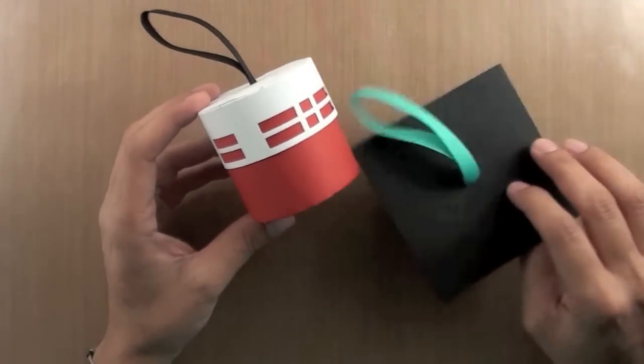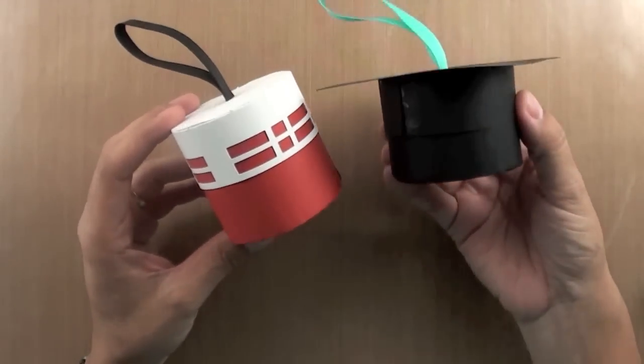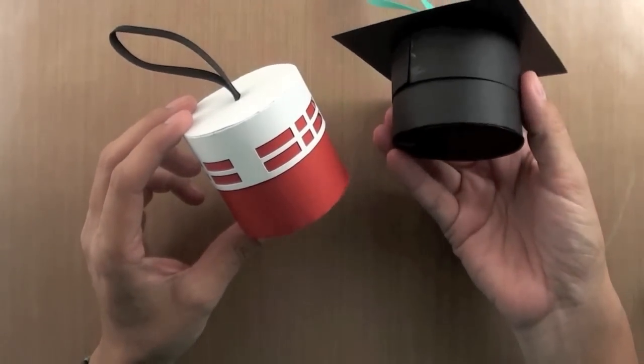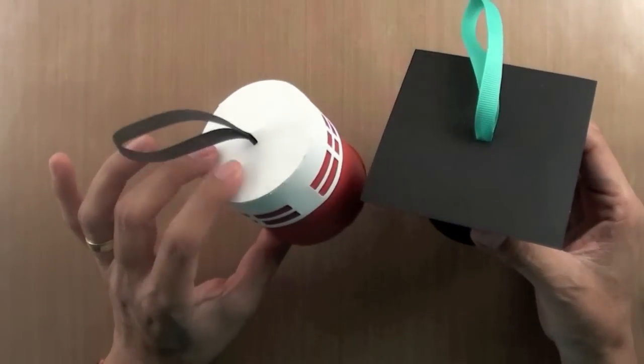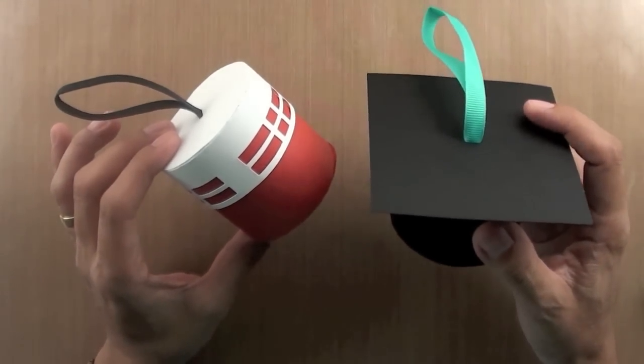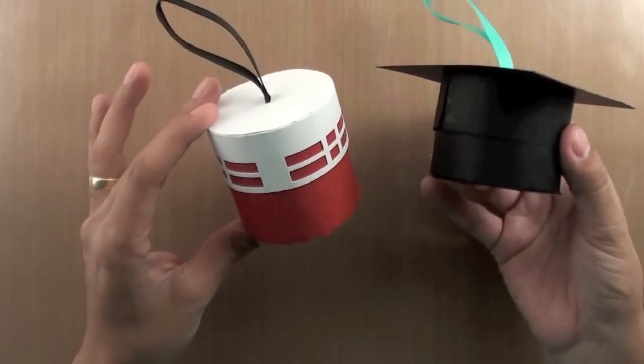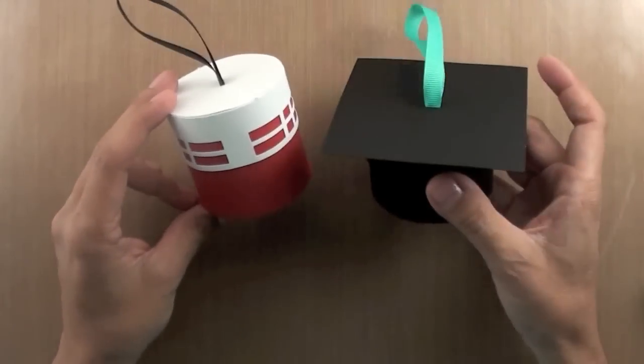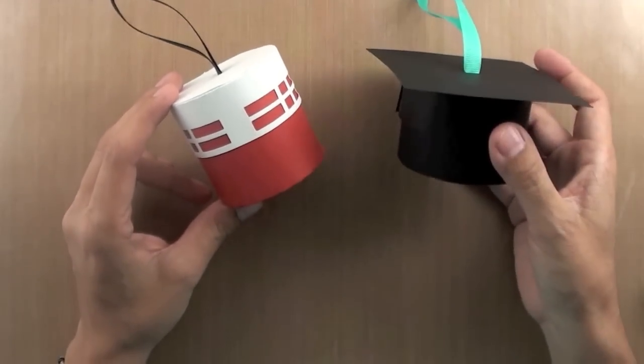And here's a variation. I have a little graduation hat. It's the same concept, except instead of adding a circle at the top of your box, you're adding a square. But it's basically the same idea. And that's the project. I hope you like it. Thanks for watching.